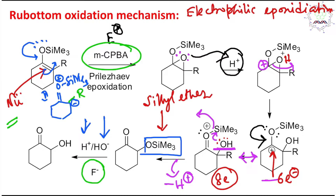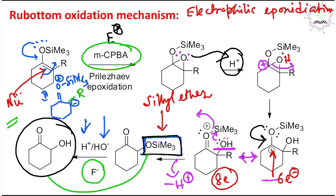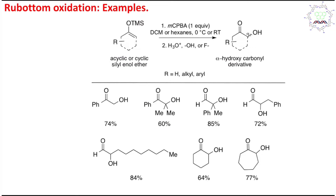In this way, what you get is the alpha-hydroxy ketone or acyloin. By the way, I've already discussed acyloin ester condensation — you may visit for better understanding. So this silyl ether is hydrolyzed to give the corresponding alpha-hydroxy ketone. This is the mechanism. Now let us discuss some examples.